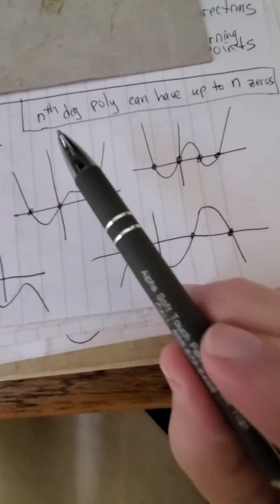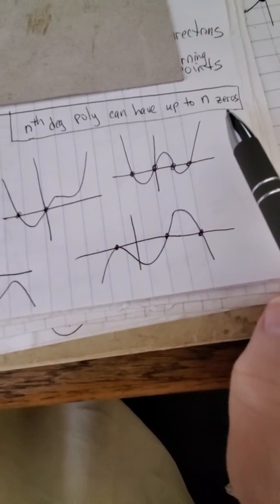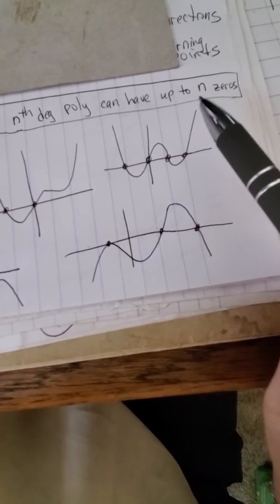And the rule is an n-degree polynomial can have up to n zeros. A zero means hitting the x-axis. So it can hit the x-axis up to n times.